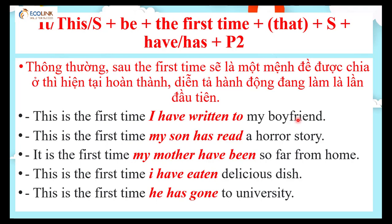Người nói mới làm hành động này, thế vì vậy thì chúng ta sẽ dùng hiện tại hoàn thành. Vậy ta có cấu trúc: It/This hoặc trạng ngữ cộng động từ to be cộng 'first time', chúng ta có thể đề giáp hoặc không, sau đó cộng mệnh đề theo sau được chia ở hiện tại hoàn thành. Để diễn tả hành động ai đó làm điều gì lần đầu tiên.